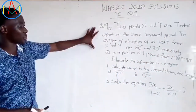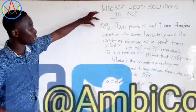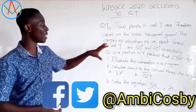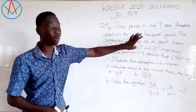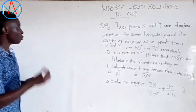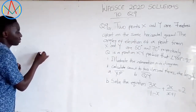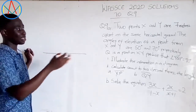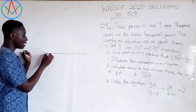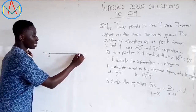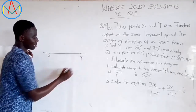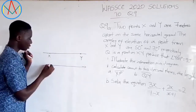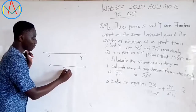So let us read the question again. 2 points X and Y are 7 meters apart on the same horizontal ground. So let's assume this is the horizontal ground. We are saying 2 points are apart on this ground. So let's say X can be here and then Y can be here.